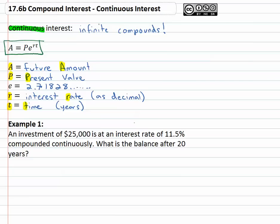And so for example, if we've got an investment of $25,000 at eleven and a half percent compounded continuously, that's that key word that tells us to use this formula, not the one that has an N in it. What is the balance after twenty years?